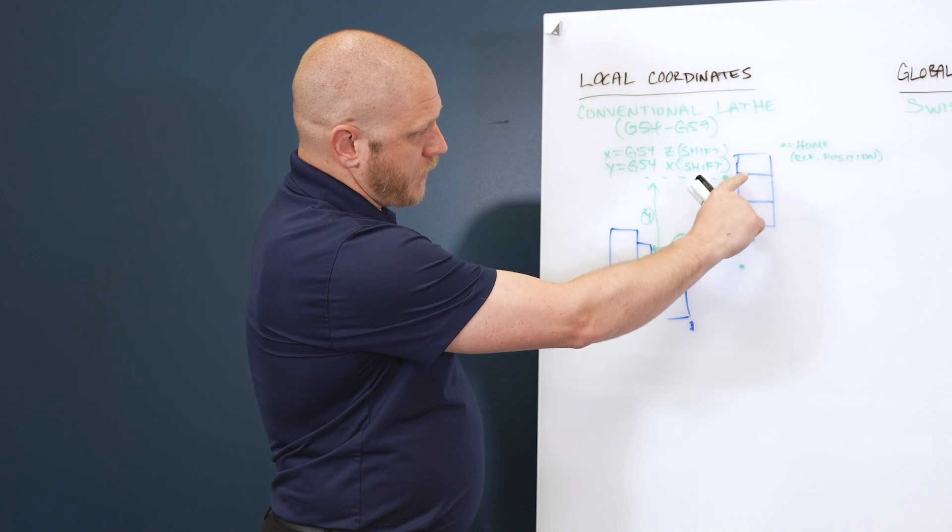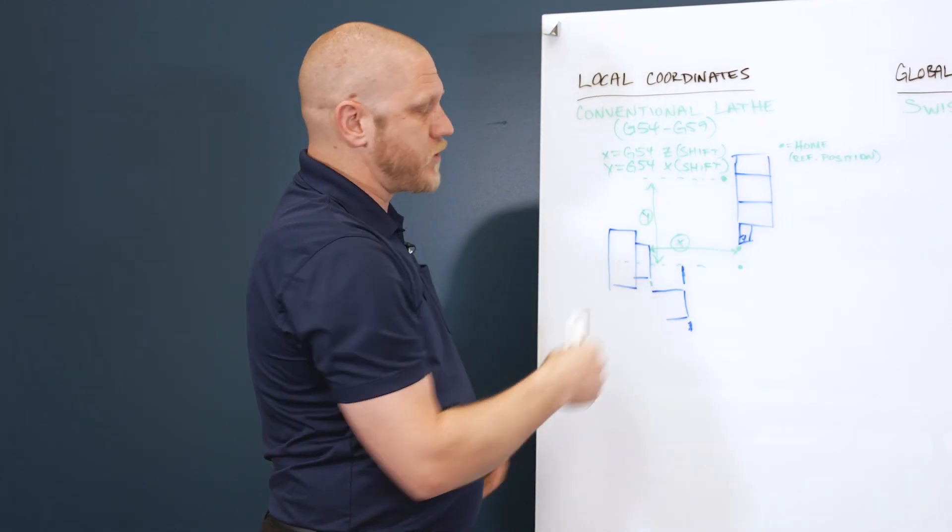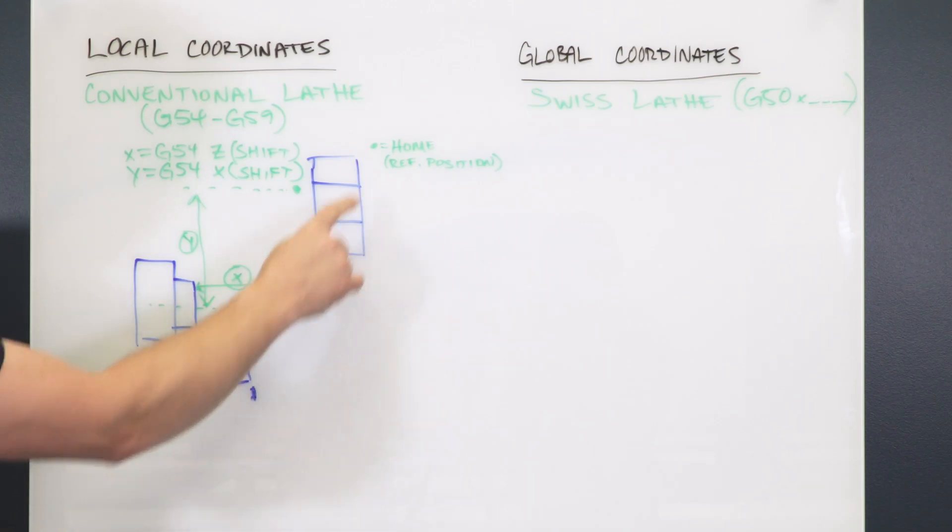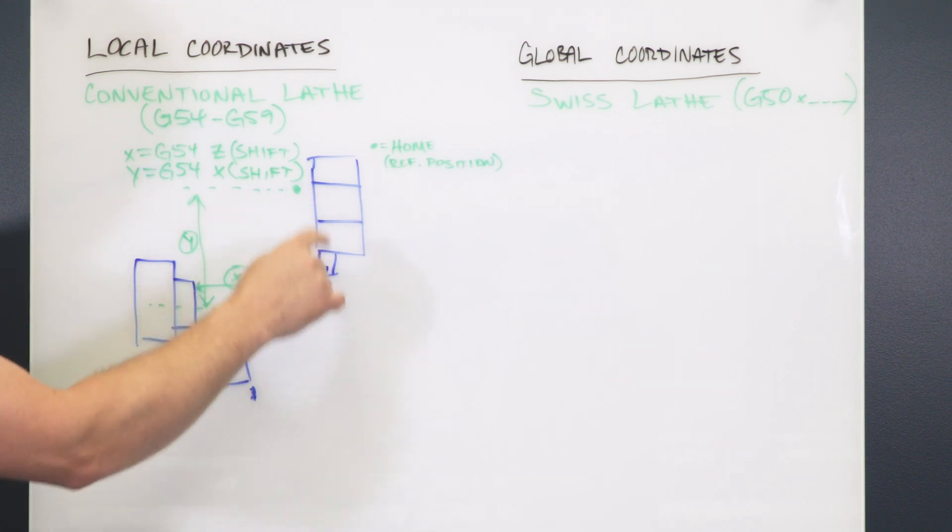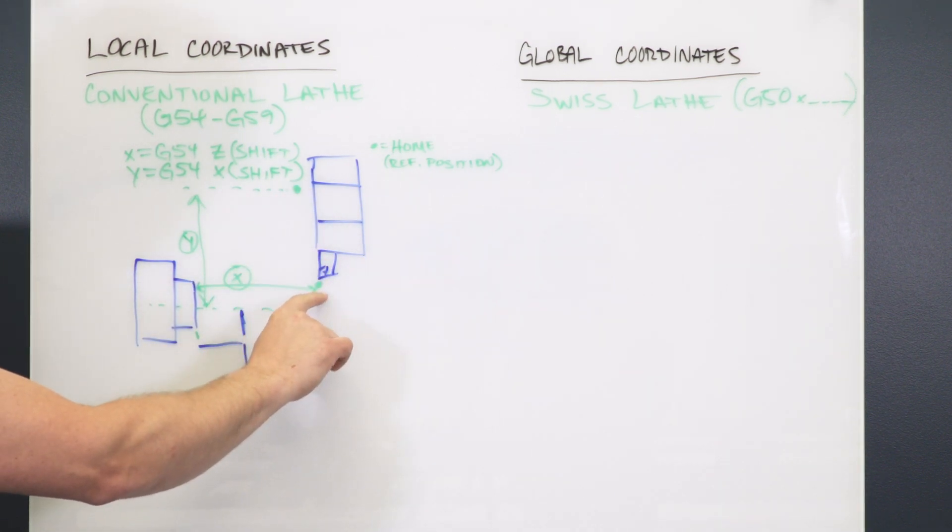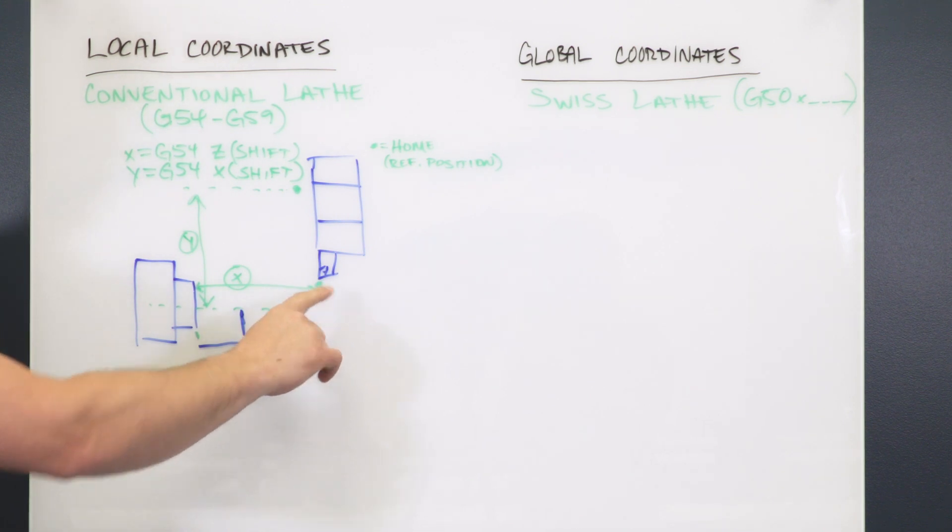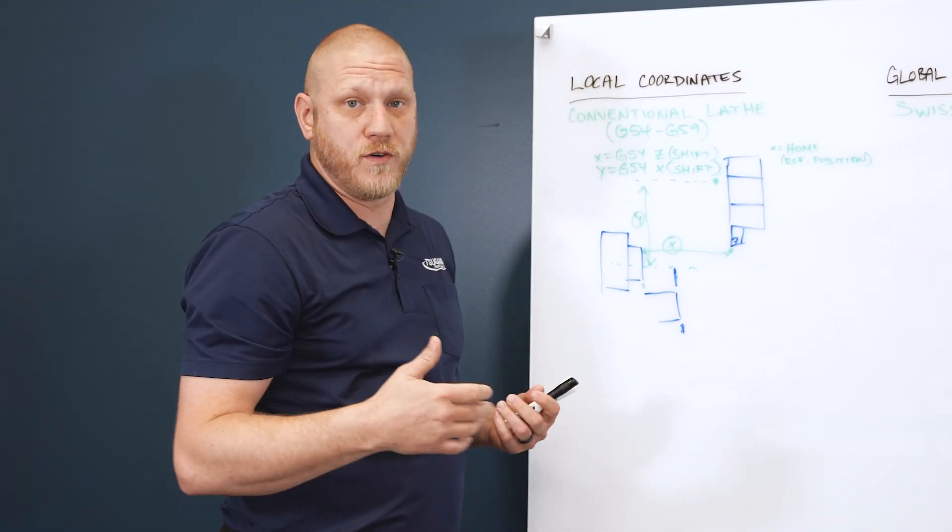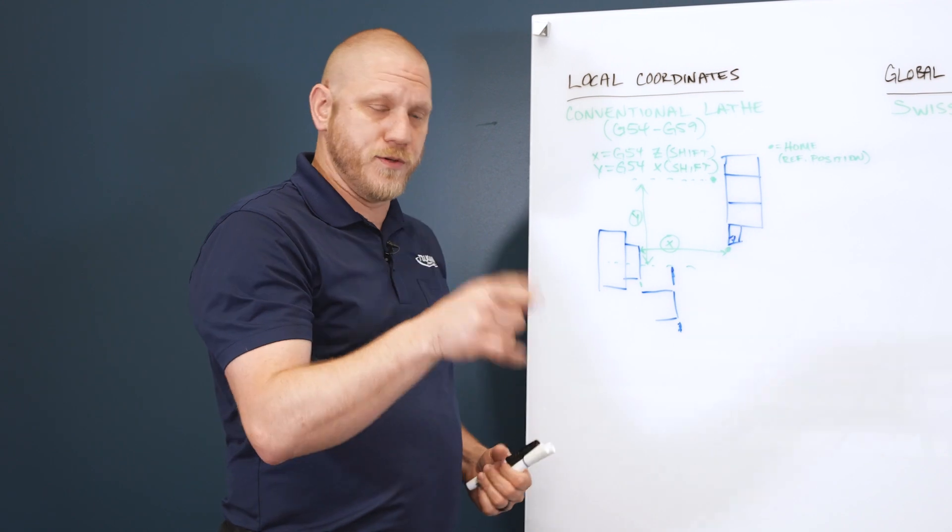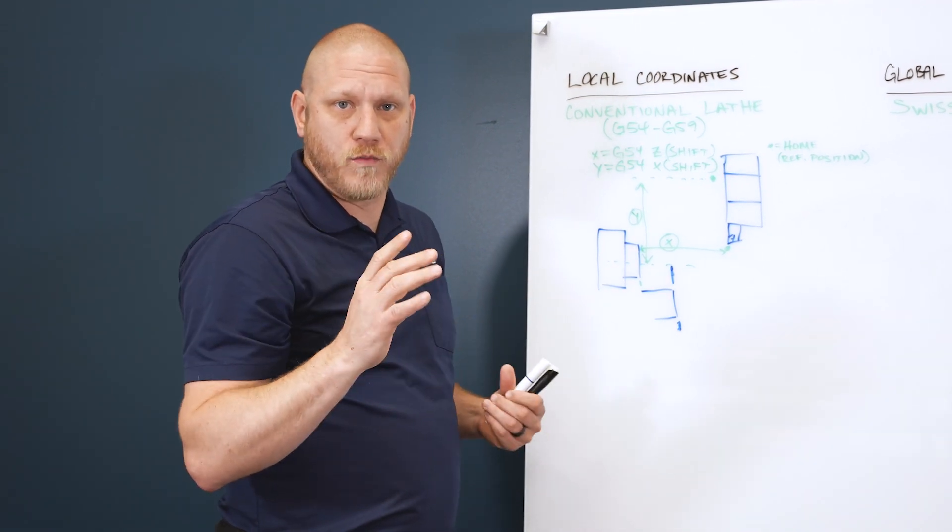For example, a work shift would be every machine has a home reference position and that's represented in this drawing by dots. So you have a dot here and a dot here. This would be Z reference position. Older machines, you'd have to do a reference return in the morning, do a zero return, it brings you back to reference position.